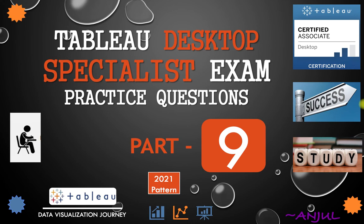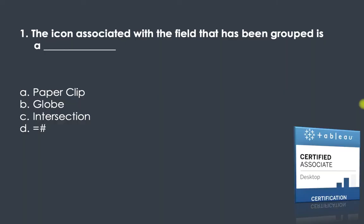Hi everyone, this is Anjee Patak and welcome to my channel. In this video we will go through a few more questions on the Tableau Desktop Specialist exam. Question one: the icon associated with a field that has been grouped is a paper clip, globe, intersection, equal to, or hash?